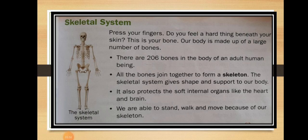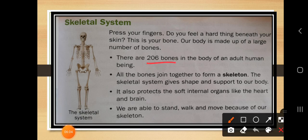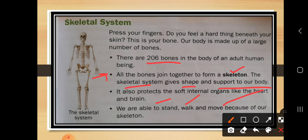Totally 206 bones are present in an adult human being. These bones are joined together to form a skeleton, and the skeletal system gives shape and support to our body. We are able to stand, walk, and move from one place to another just because of the skeleton, or you can say the bones. Bones — B-O-N-E-S — join together to form a skeleton.